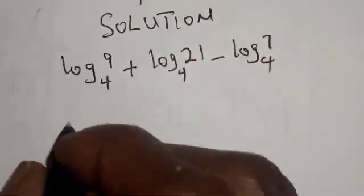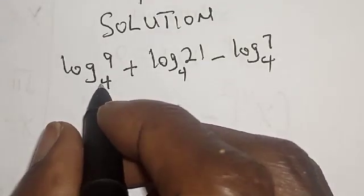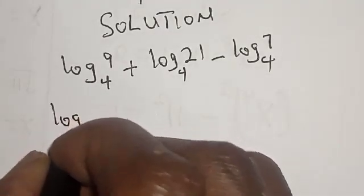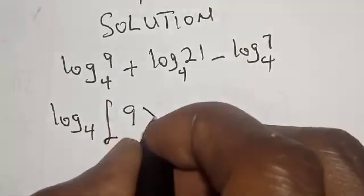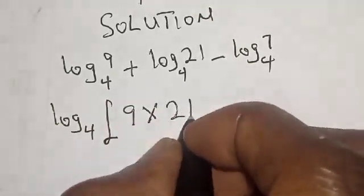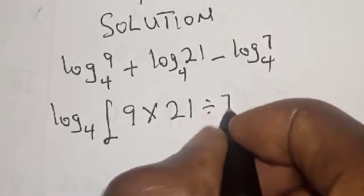This is the same thing as log base 4, since the base is common. We have log₄ of 9 multiplied by 21 divided by 7.